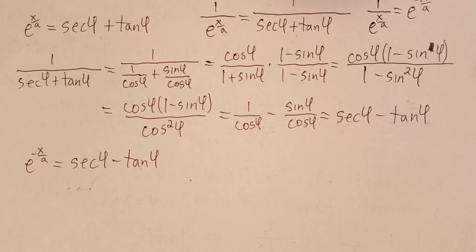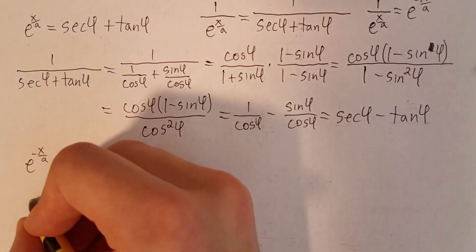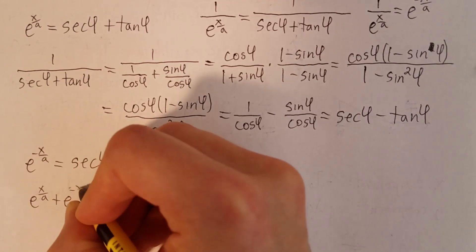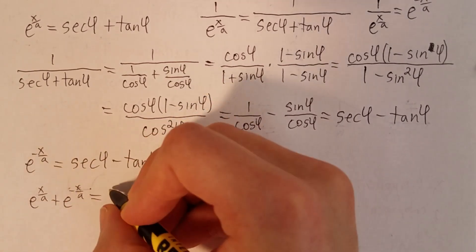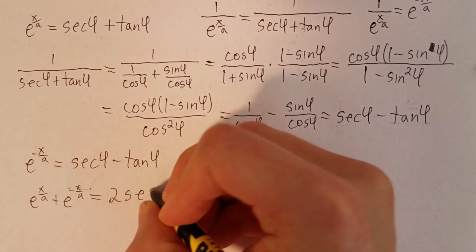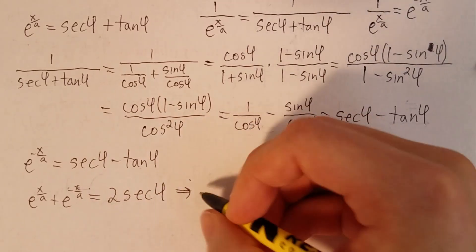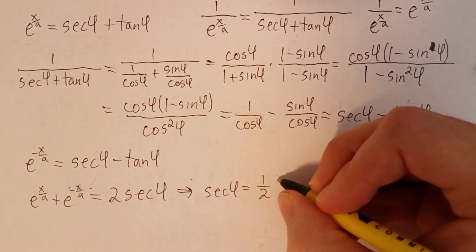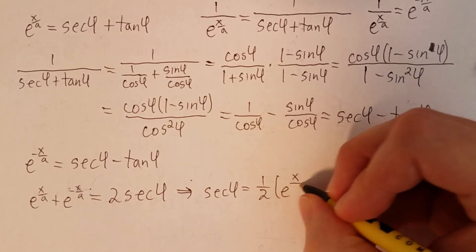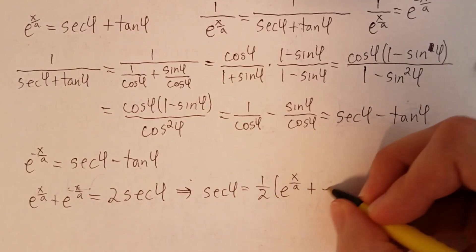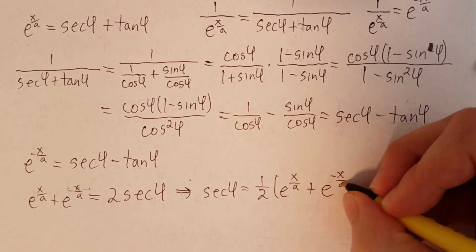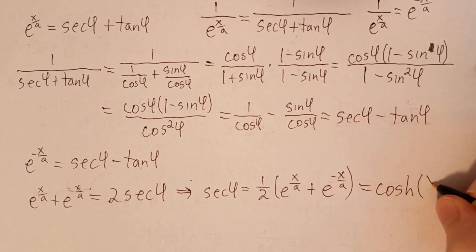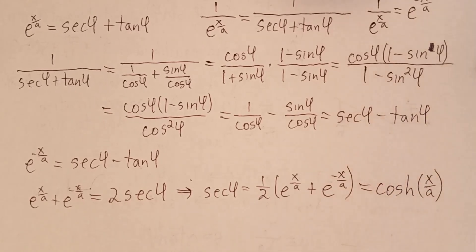And we can add this to our other equation, and the tangents will cancel out. So we'll just have e to the x/a plus e to the minus x/a is equal to 2 secant φ. Or secant φ is equal to 1/2 times e to the x/a plus e to the minus x/a, which you might recognize as the hyperbolic cosine of x/a. And if you don't recognize what a hyperbolic cosine is, don't worry about it. You can just think of it in terms of these exponentials.